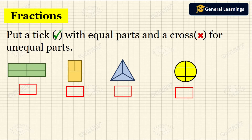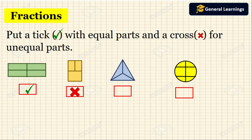Now we are going to put a tick for equal parts and a cross for unequal parts. The first picture has 4 parts all of the same size — equal parts — so we tick it. The second has 3 unequal parts, so we cross it. A triangle with 3 equal parts gets a tick. A circle with 6 unequal parts gets a cross.